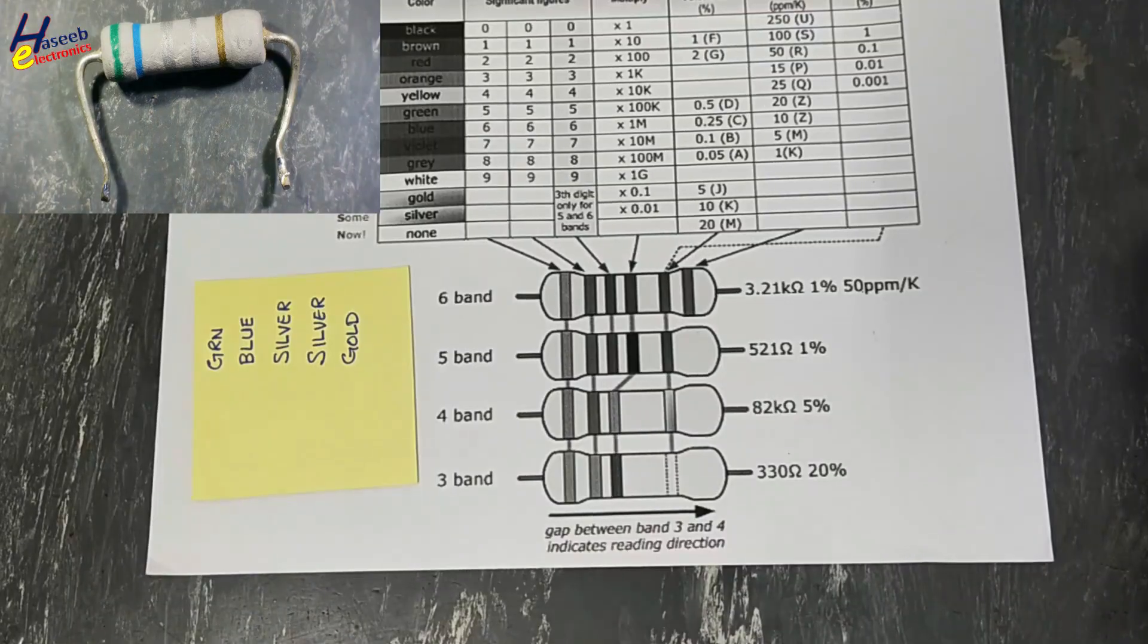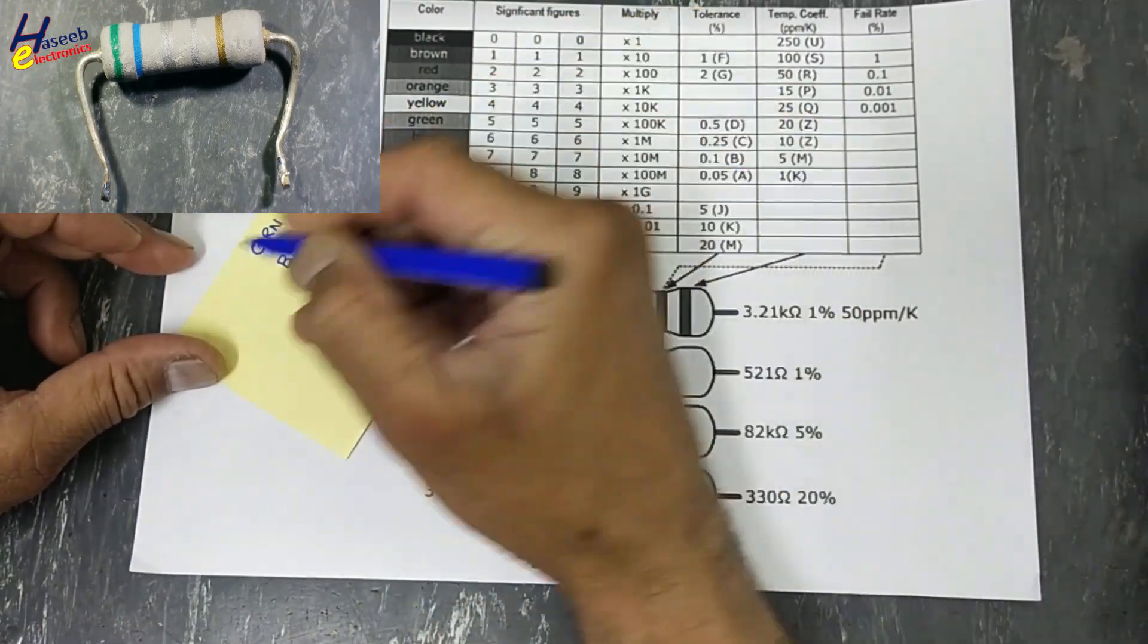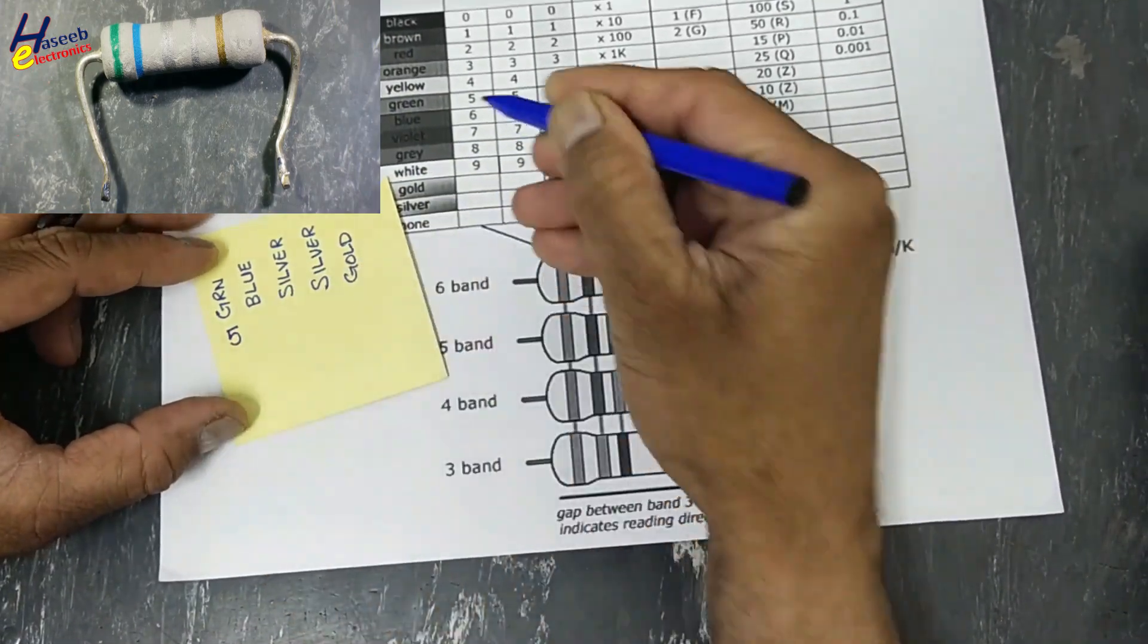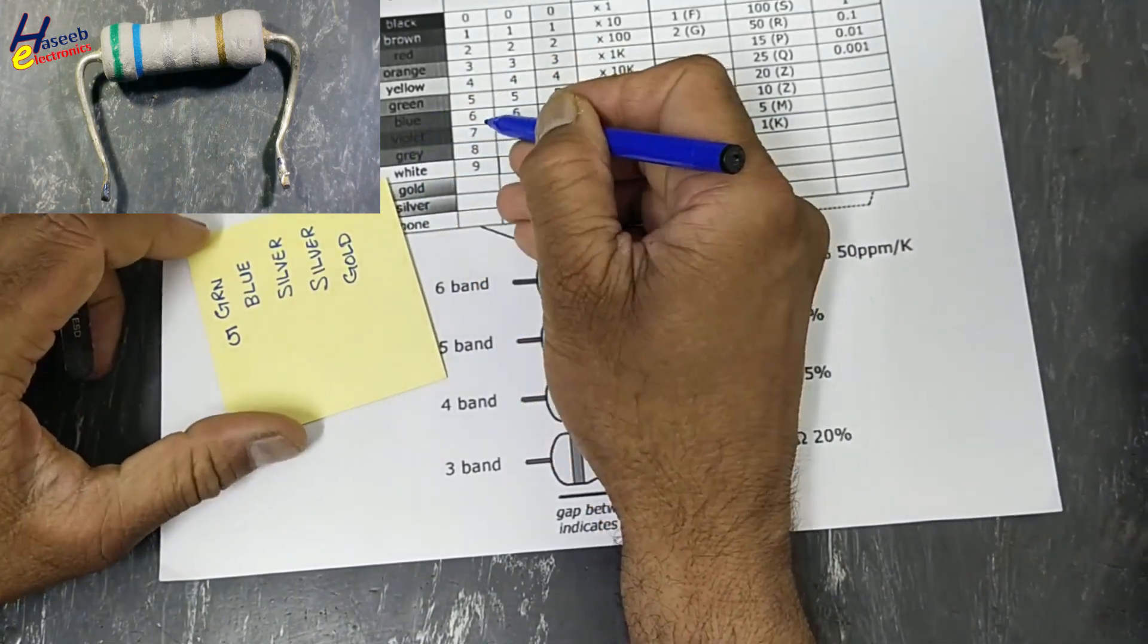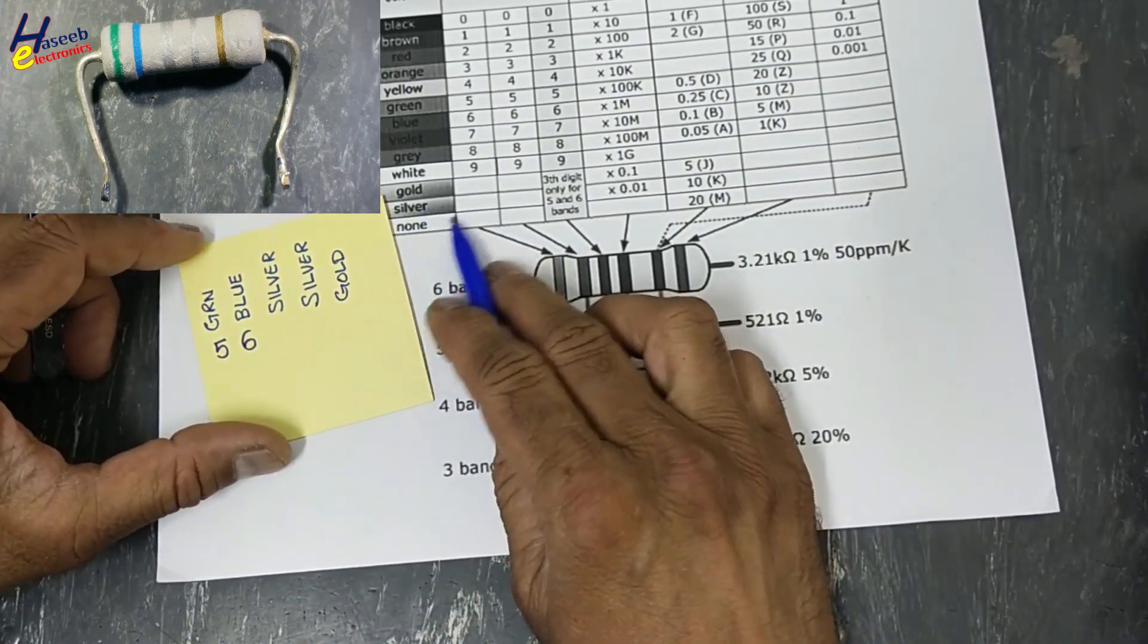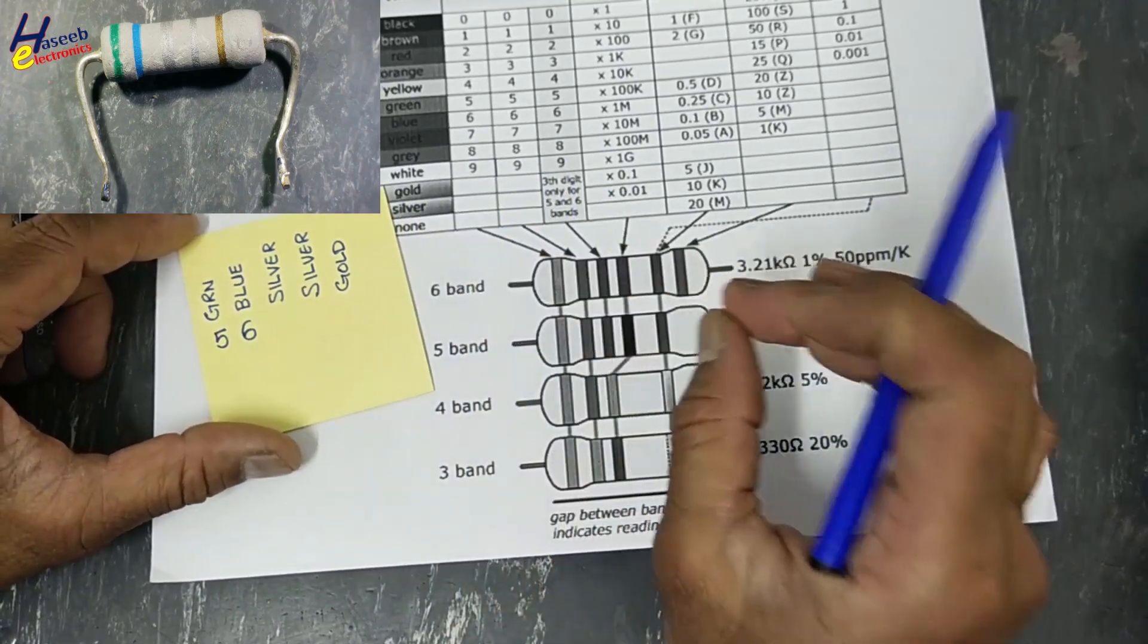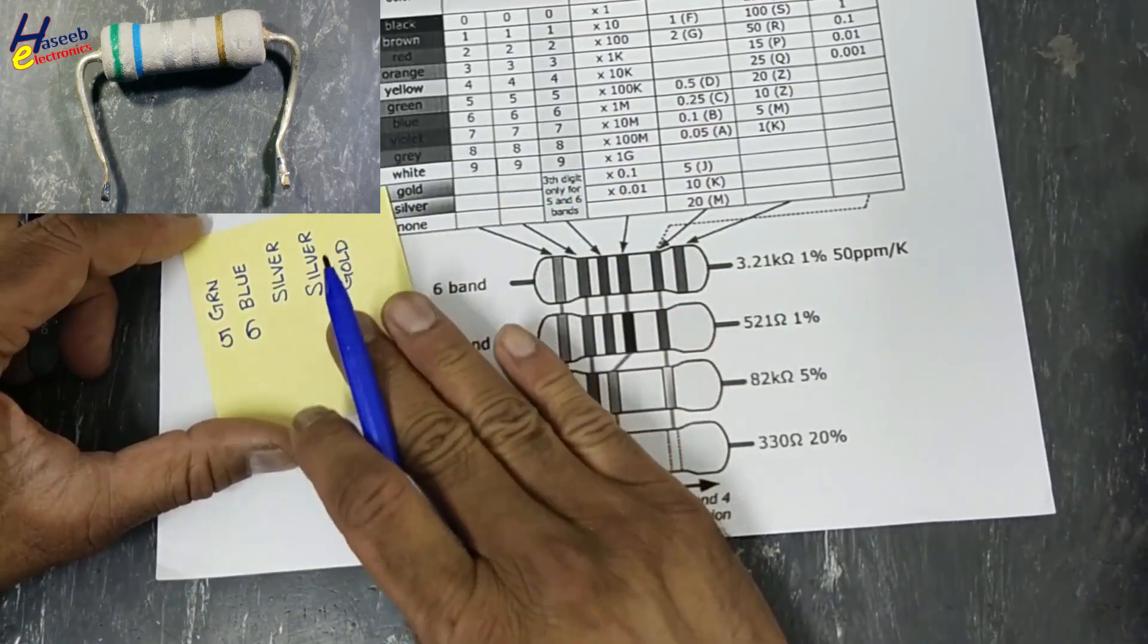Let's write the values: green is 5, then second band blue is 6. Third band silver or gold is multiplier. Third digit will only appear in five and six band resistors, so that means this is not a five band resistor, it is a four band resistor.